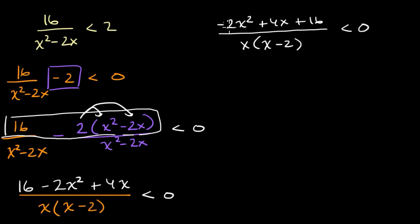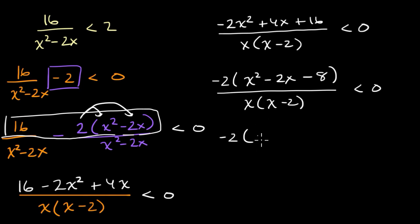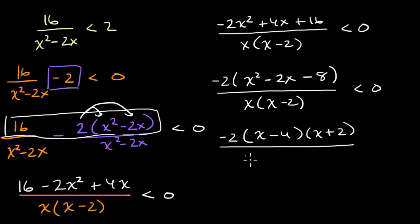Now I'll factor the numerator. I can factor out a negative two, giving negative two times (x squared minus two x minus eight), all over x times (x minus two), less than zero. For the quadratic, I need two numbers that multiply to negative eight and add to negative two: negative four and positive two work. So the numerator becomes negative two times (x minus four) times (x plus two), all over x times (x minus two), less than zero.